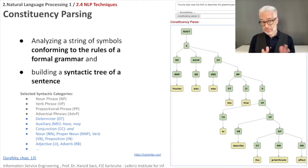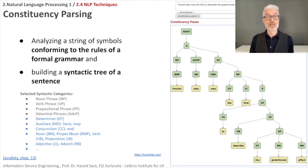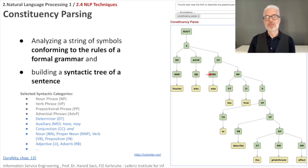After determining the type of each word, you want to see more relationships in the sentence. Parsing a sentence means analyzing whether it conforms to the rules of your grammar. By parsing, you build a so-called syntax tree — this is constituency parsing. In our example, 'Fourier also was the first to describe the greenhouse effect.' First, part-of-speech is determined: Fourier is a proper noun, 'was' is a verb, and so on.